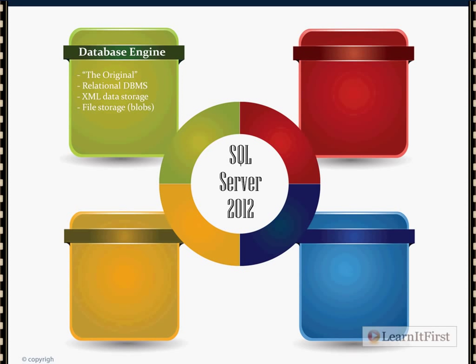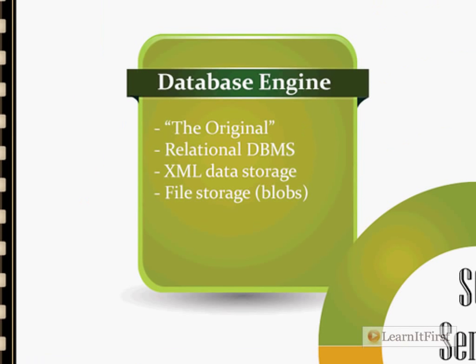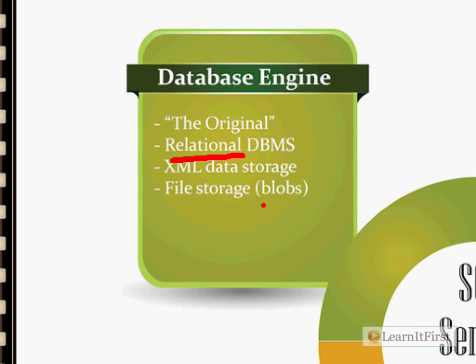Component number one is called the database engine. This is your traditional SQL Server product. In the 90s, when somebody said 'I want to use SQL Server,' this was what SQL Server was — the database engine. SQL Server started out as the database engine back in 1989, and then evolved to add the other three parts. When you think of a database and Microsoft SQL Server, this is what you're probably thinking of. It is what is considered a relational database.